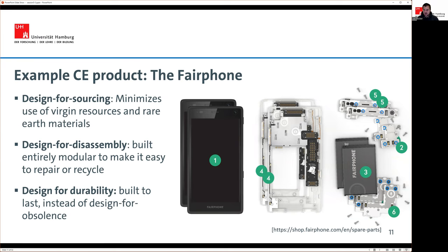One example of this from technology is the Fairphone — a smartphone like Samsung, Apple, or Google phones, but built on circular economy principles. It minimizes the use of virgin and rare earth materials, uses recycled materials, is built entirely modular for easier repair and recycling, and is designed to last rather than becoming obsolete after two years. About 20% of people asked have heard of the Fairphone, but only two to four percent actually use it — myself included, even though I know it exists and know it's a more sustainable option.